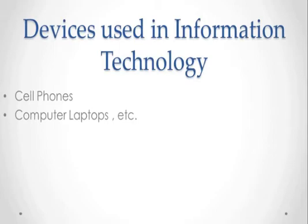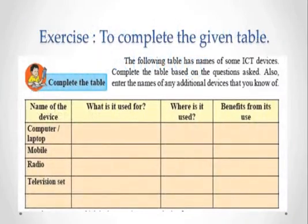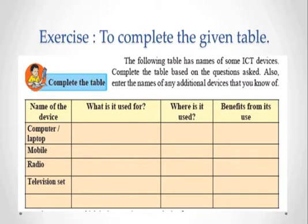On page 108 of your book, there is a table given with some of the ICT devices. You have to complete that table on your own. For example, the first device is a computer. It is used for writing, solving math problems, watching movies, listening to music, communicating with other people, sending email, using the internet, or for research purposes.